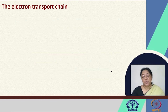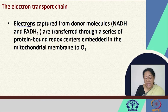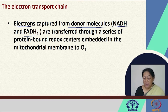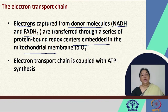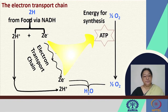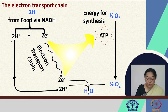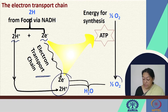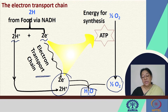The electron transport chain has electrons captured from donor molecules — NADH and FADH2. These electrons are transferred through a series of protein-bound redox centers embedded in the mitochondrial membrane. Finally, they couple with ATP synthase. The cascade of reactions in the electron transport chain, together with oxygen, reduces water in the processes involved.